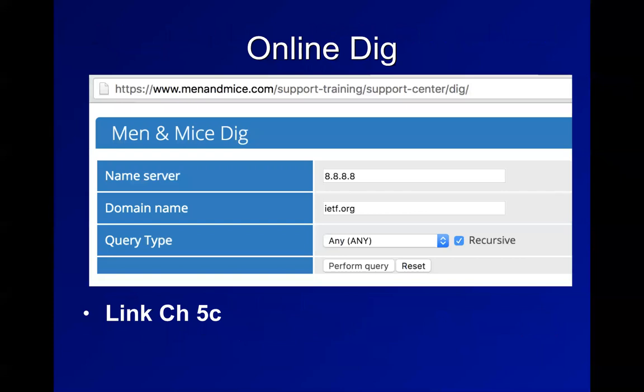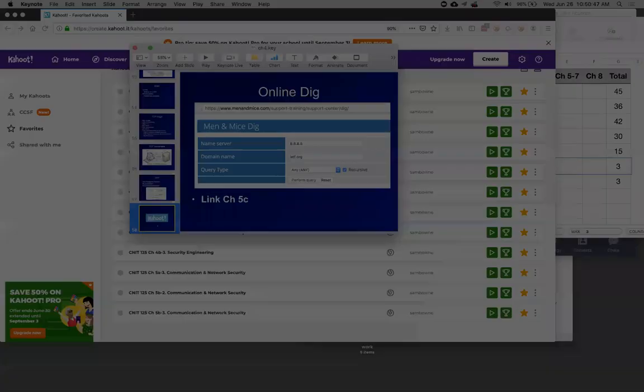You can do DNS queries using online looking glasses - like Men and Mice web-based dig - which give you a clean DNS response outside any filtering. A lot of companies filter DNS, including Starbucks. Using these online looking glasses gives you a more pure, clean DNS response so you can see DNSSEC in action.